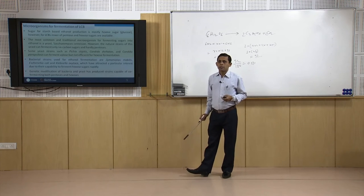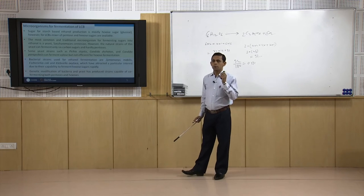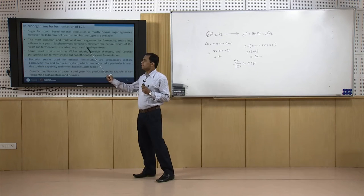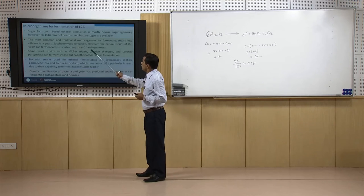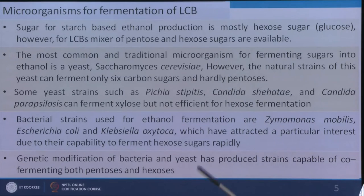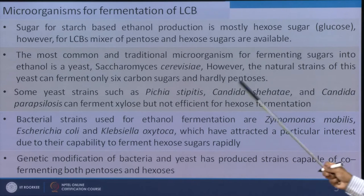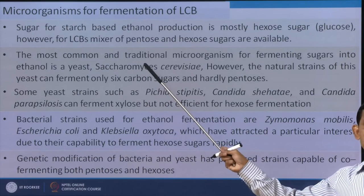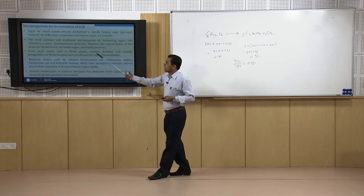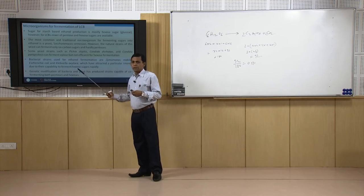Now we will see the microorganisms suitable for ethanol production from lignocellulosic biomass. Since lignocellulosic biomass contains both pentose and hexose sugars, the conventional yeast Saccharomyces cerevisiae is applicable for hexose sugars, but this natural strain cannot ferment pentose sugars. Some yeast species — specifically Candida and Candida parapsilosis — can work on pentose sugars and convert them to ethanol. Not only yeast, but some bacterial species are also available which can work on these sugars to produce ethanol.